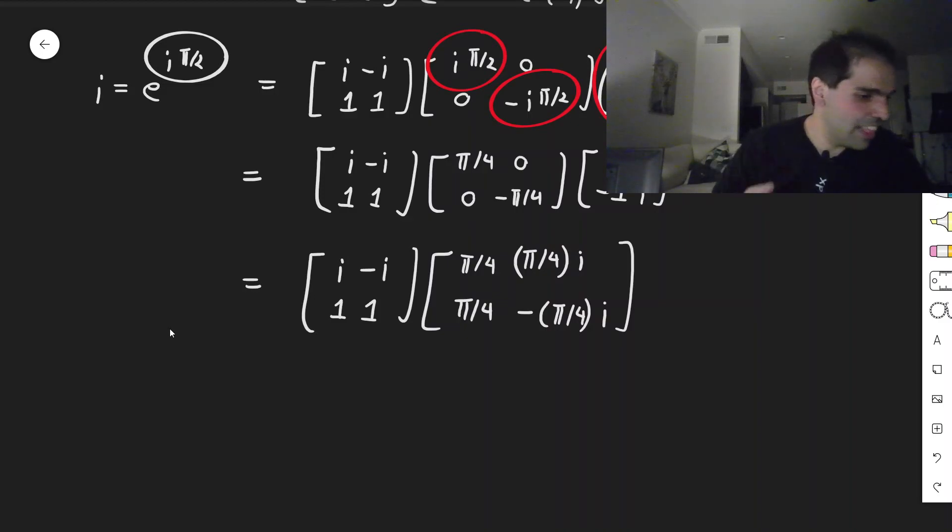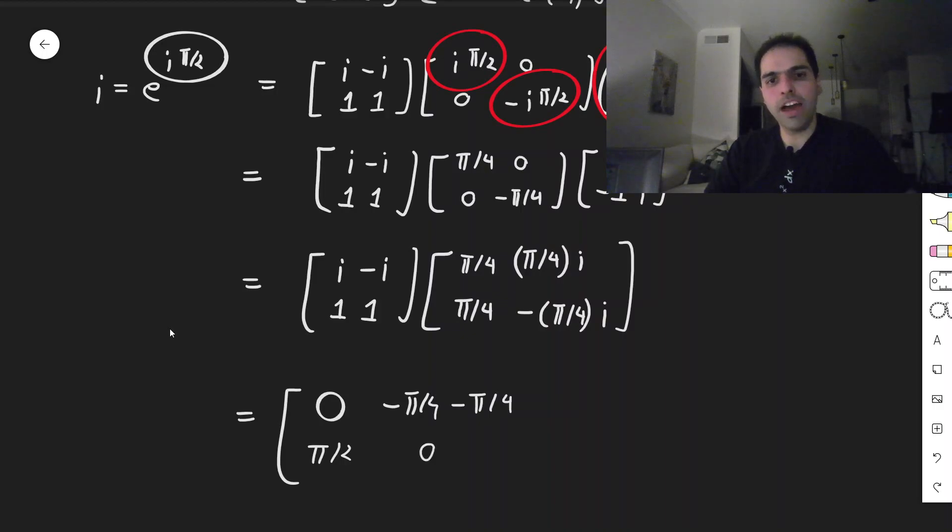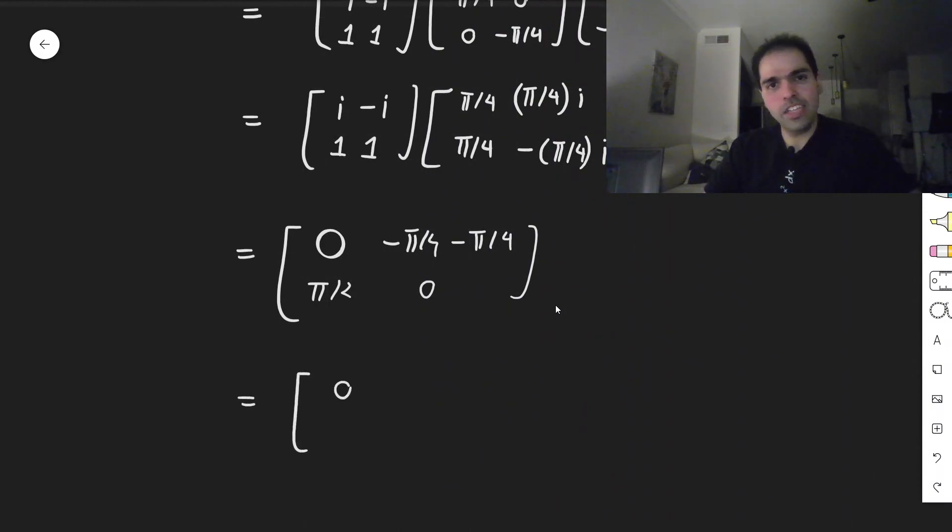All right, and then you have this, and then you calculate that, so what this becomes, so pi over 4 times i minus pi over 4 times i, which becomes 0. And then this becomes minus pi over 4, and then plus, but then with minus, so minus pi over 4. And then what we get is, so pi over 4 plus pi over 4, so pi over 2, and then pi over 4i minus pi over 4i, which is 0. And lastly, we get 0 minus pi over 2, pi over 2, and then 0. And that is our ln of our matrix.